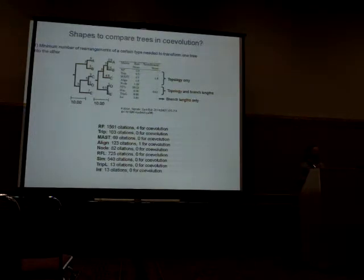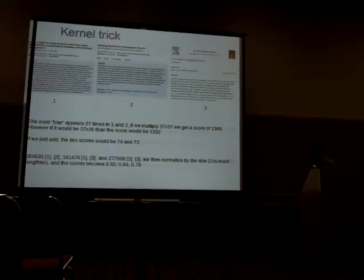What they actually do is just try to find the rearrangements that you need to let tree number one be equal to tree number two. The more rearrangements, the less similar the trees are. However, you can see that in evolutionary studies, they haven't been explored so much.